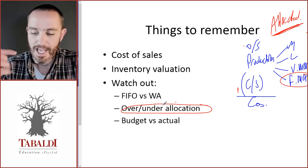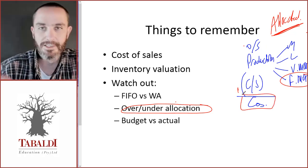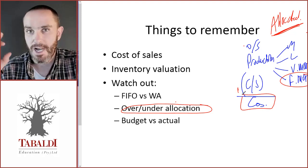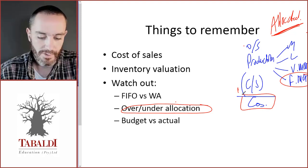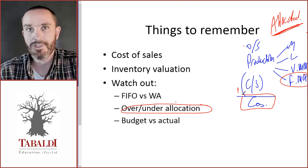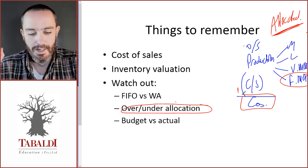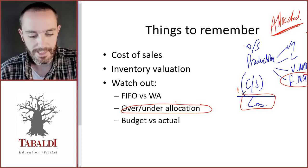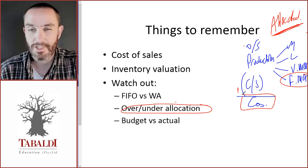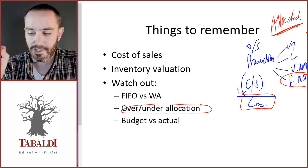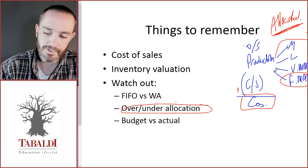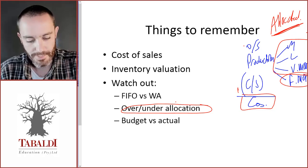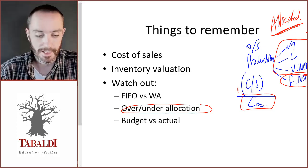We include the over or under allocation in our cost of sales calculation. For accounting purposes under IAS 2, this over or under allocation goes to cost of sales. For inventory valuation, for variable costing we exclude fixed manufacturing overheads — it's only the first three cost components — and for absorption costing we include it.